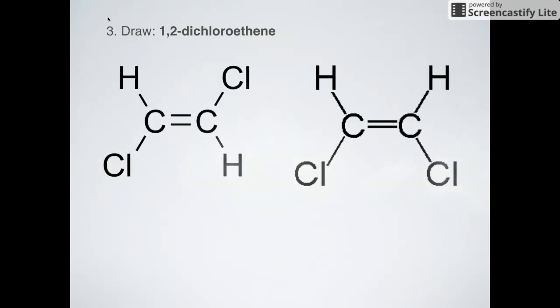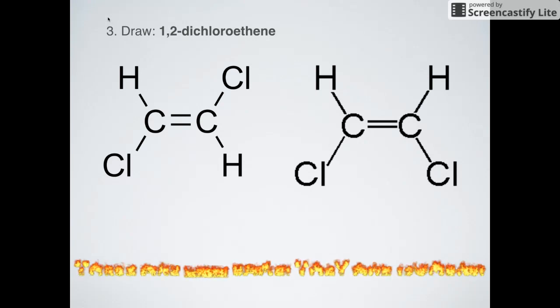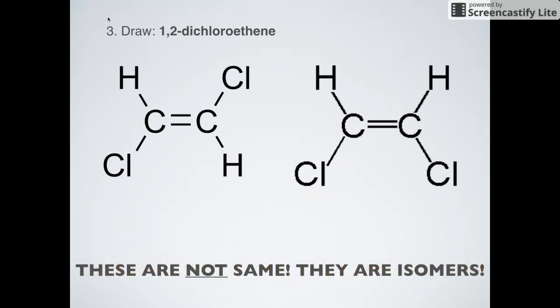Now what we really care about are those alkenes. If I asked you to draw on a piece of paper 1,2-dichloroethene, notice it ends in -ene, it's an alkene, then how would you draw it? I do this in class all the time and half the kids will draw it this way and half the kids will draw it this way. Are these two things the same structure? The answer? Definitely not. They are isomers, geometric isomers.